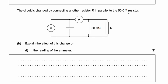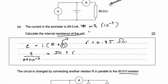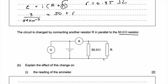Now the circuit is changed by connecting another resistor R in parallel to the 50-ohm resistor. We need to explain the effect of this change on the reading of the ammeter. You can see both circuits are the same, but this one has an additional parallel combination — they're adding an extra resistor right there.